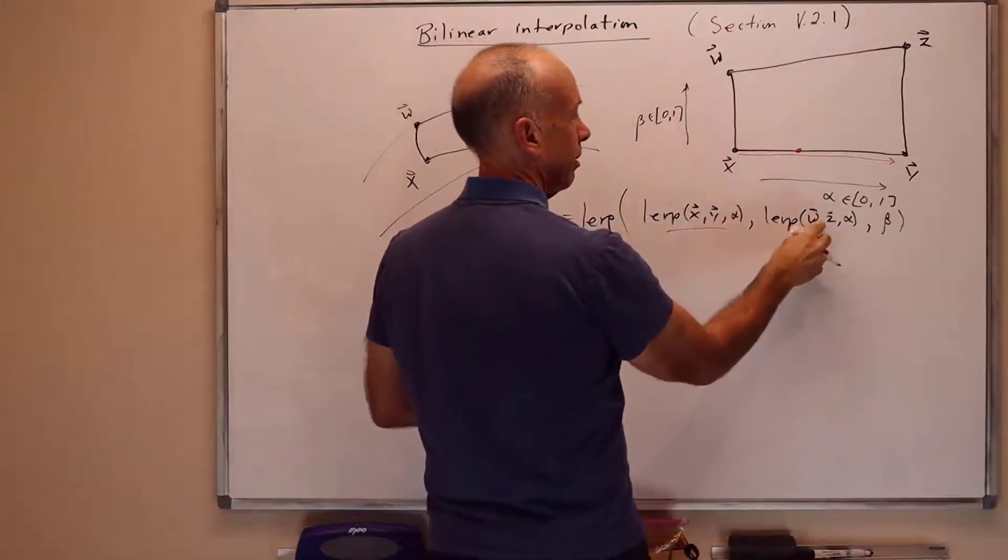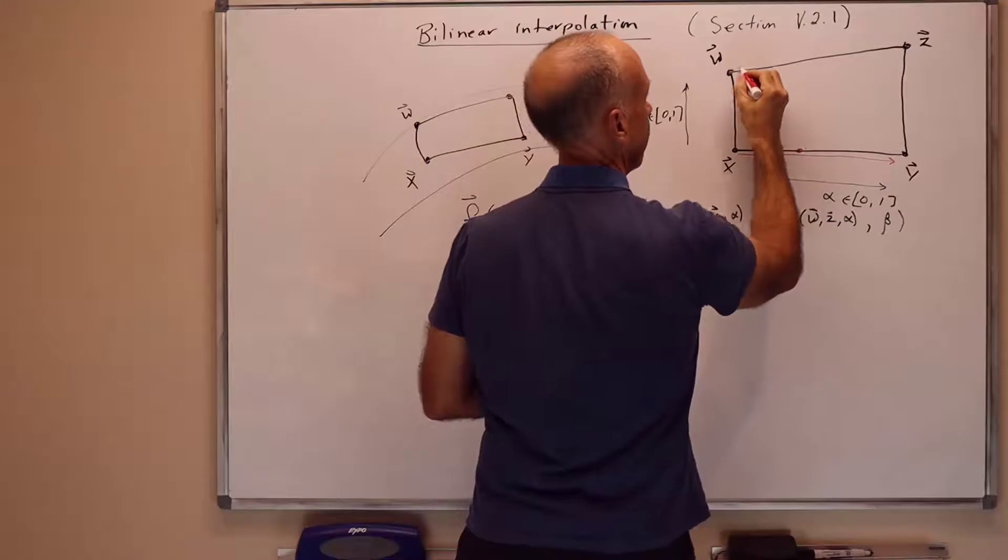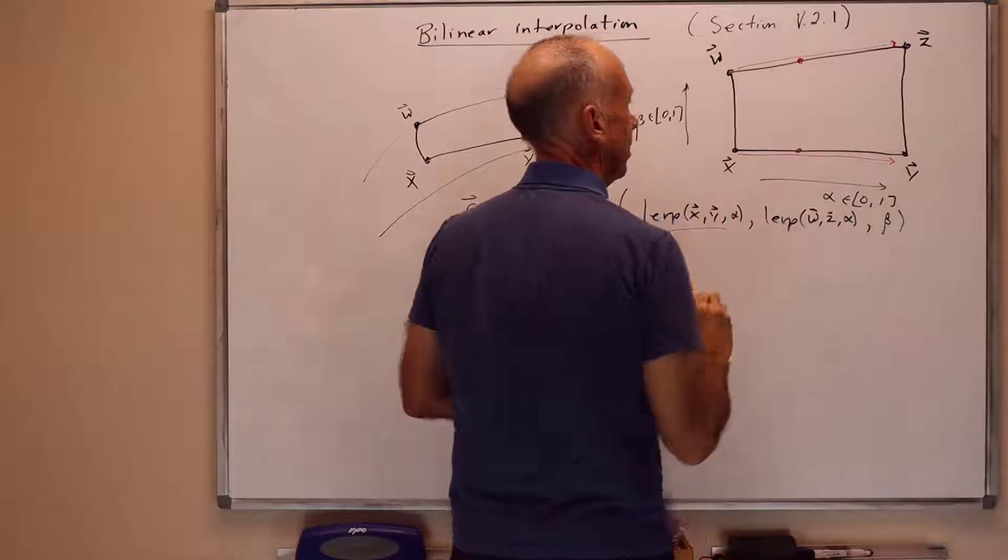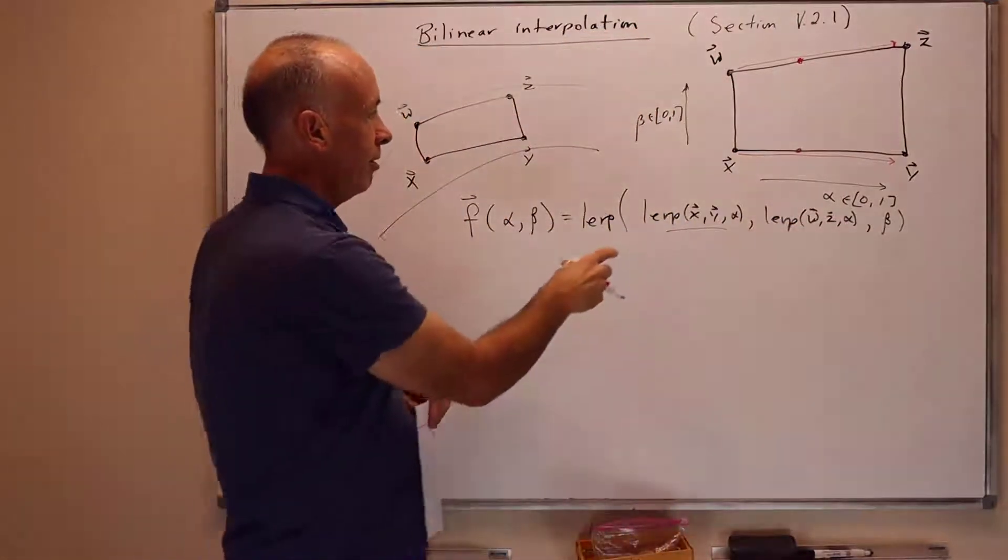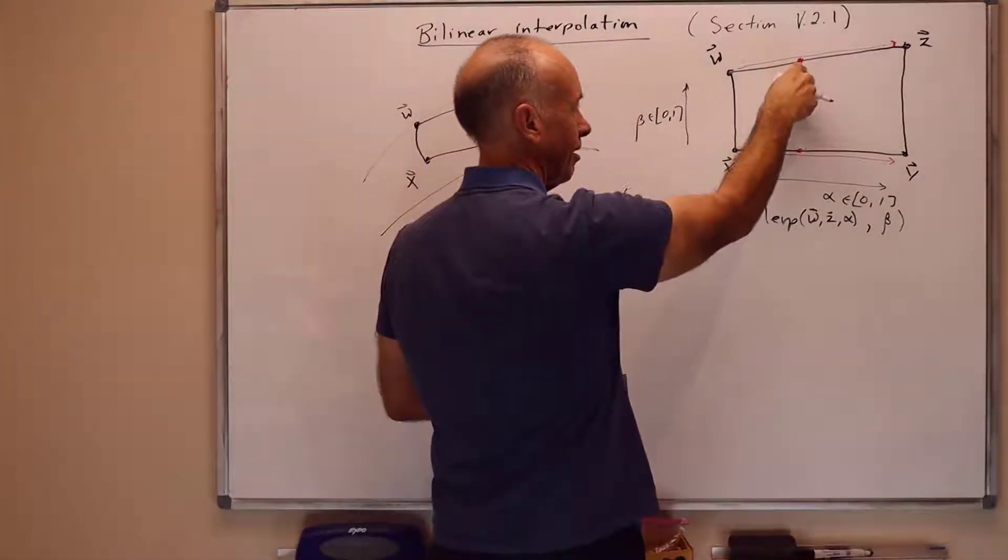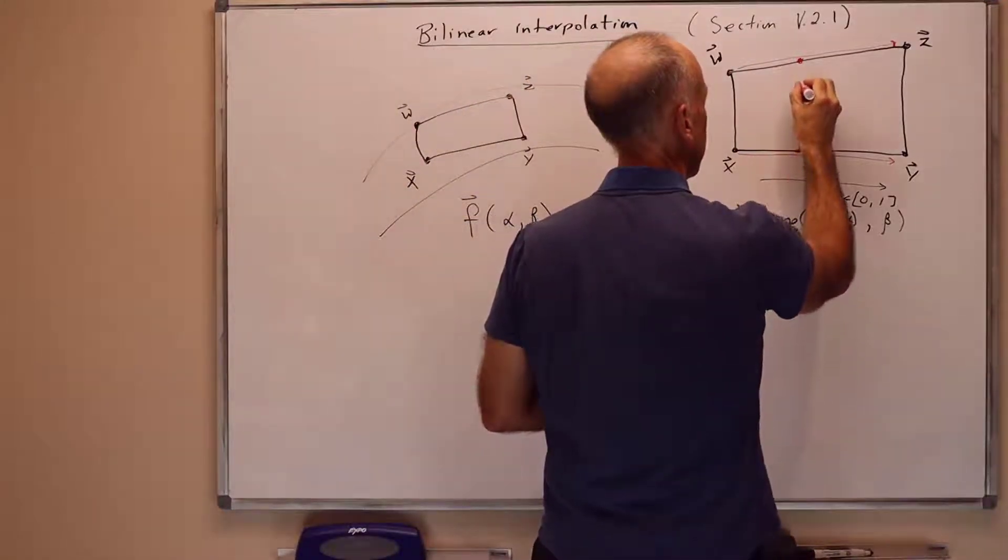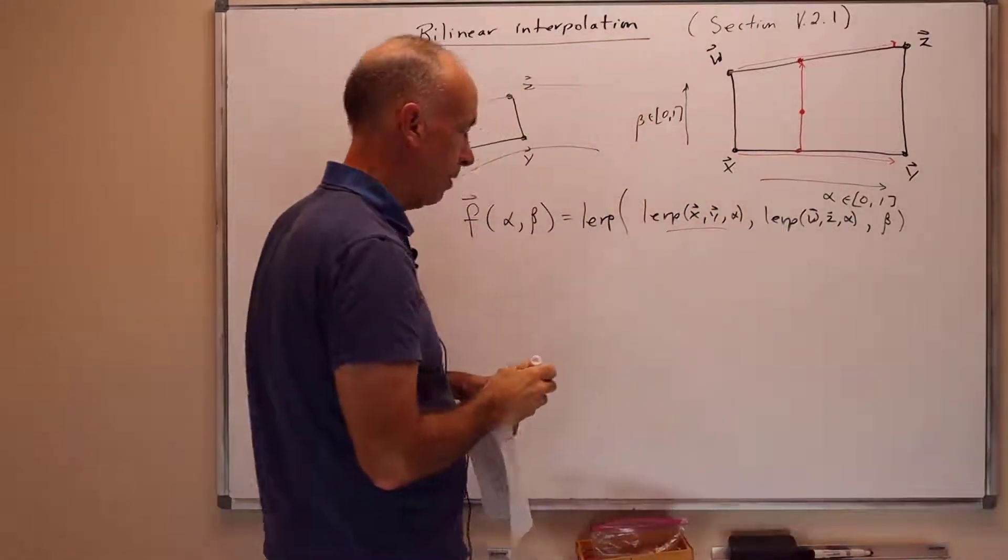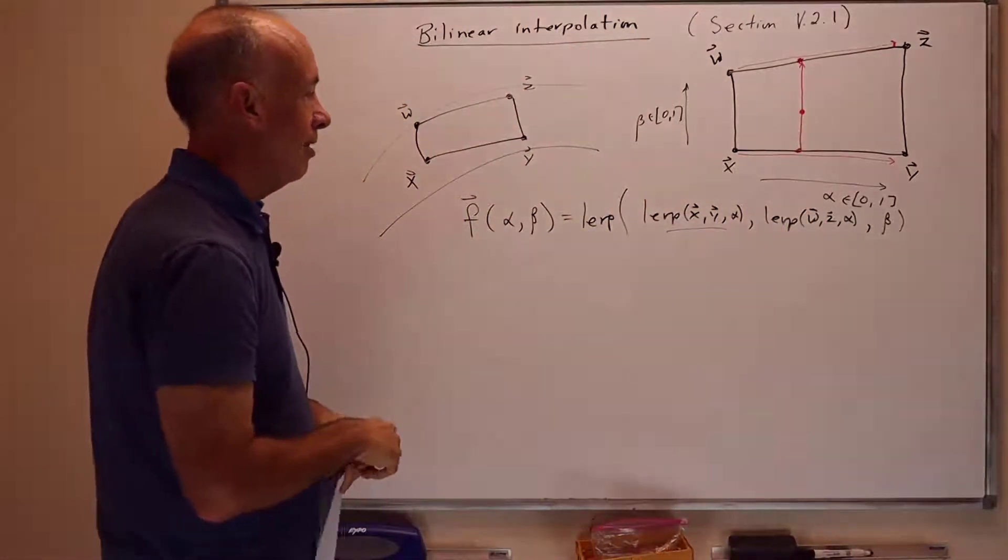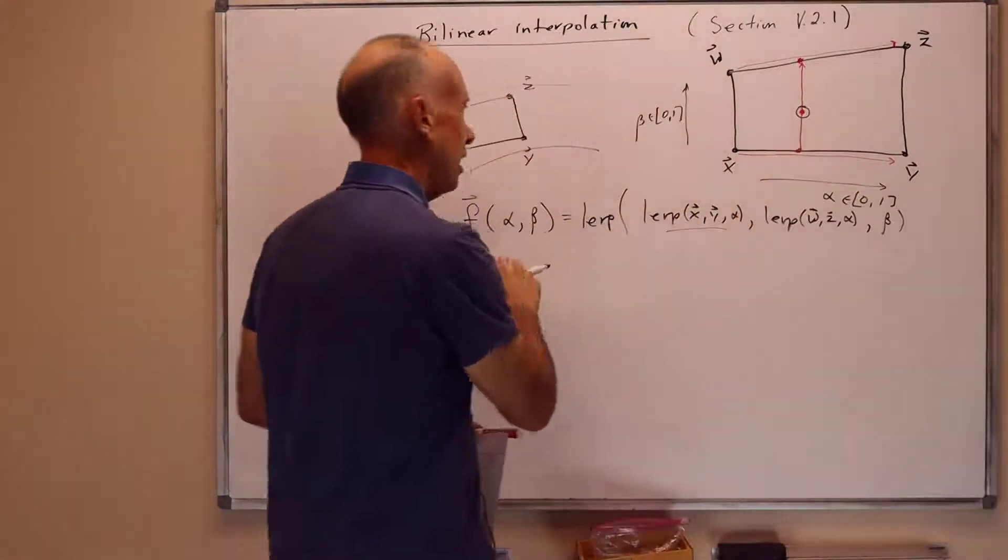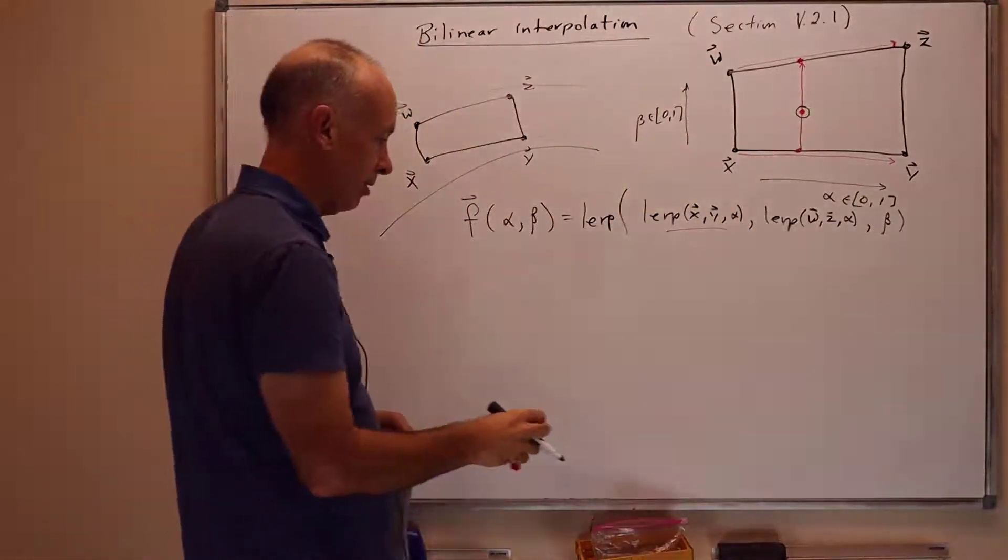Likewise we're LERPing from w to z by fraction alpha. So we're going from w to z by the same fraction alpha. And that gives us some point there. And then we're LERPing from the bottom point to the top point by fraction beta. So that gives us some point there. And this will be the value of f of alpha beta as shown in the picture.